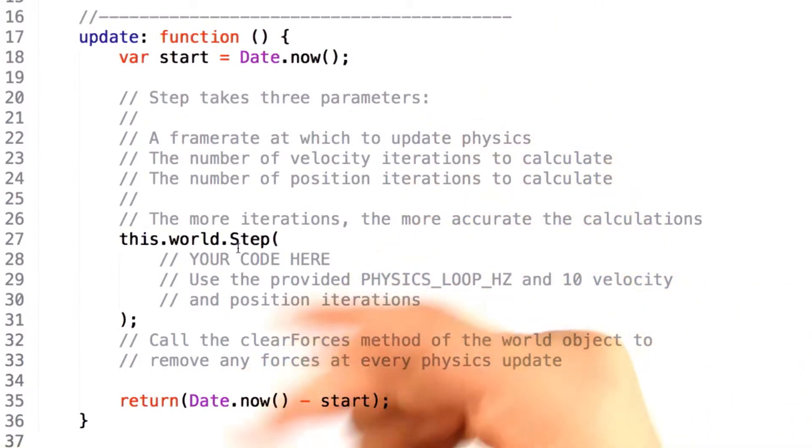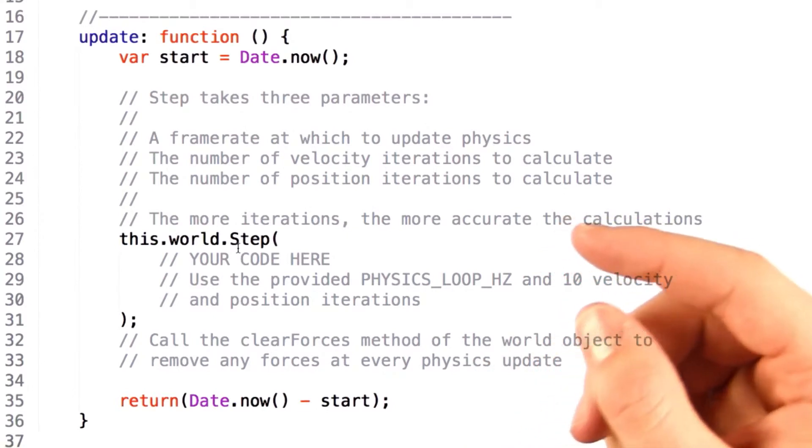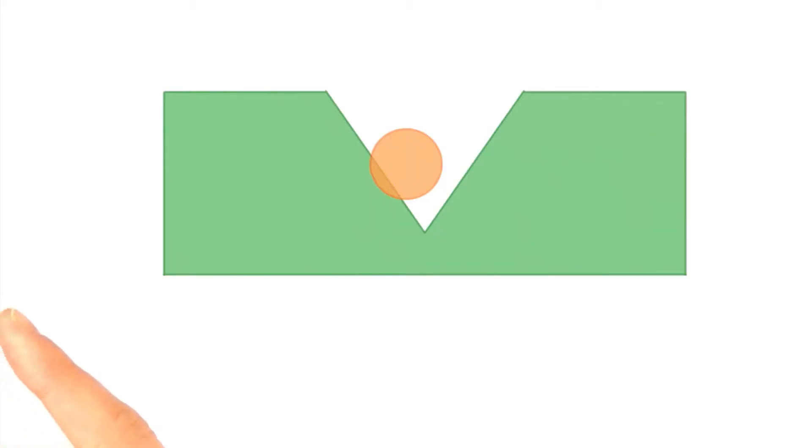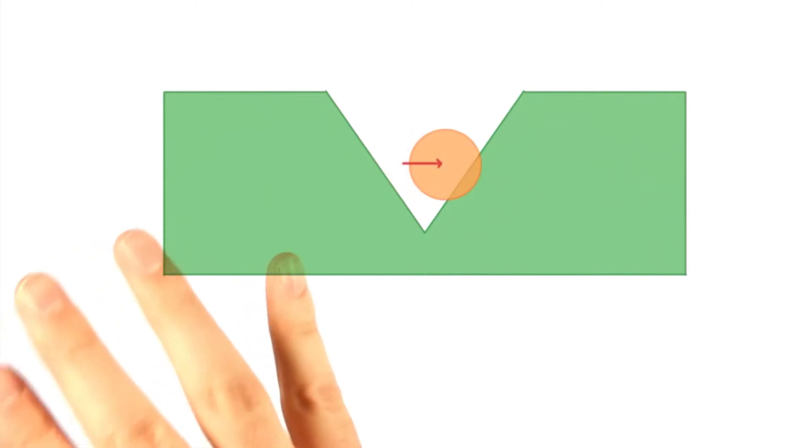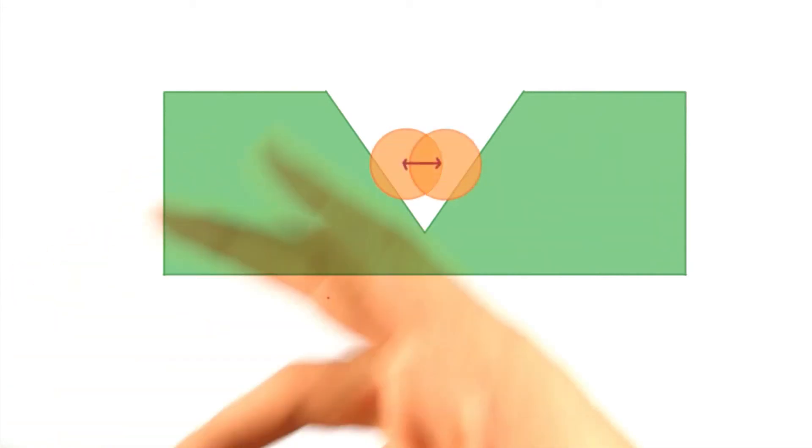Without going into too much detail, solving for collisions in an environment while ensuring that objects aren't interpenetrating is actually a pretty cumbersome process and can't be solved in a single pass. For example, consider if two objects are penetrating and fixing the penetration causes a penetration collision with a new object. In turn, fixing that one may cause yet another collision, and so on.